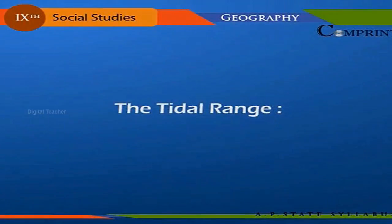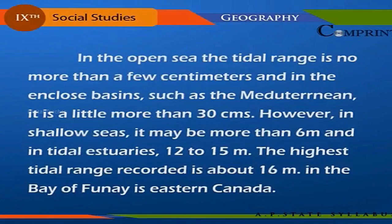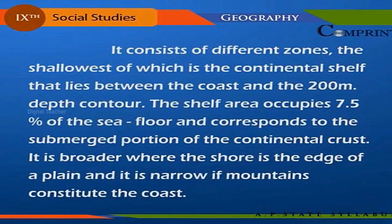In the open sea, the tidal range is no more than a few centimeters. In enclosed basins such as the Mediterranean, it is a little more than 30 centimeters. However, in shallow seas it may be more than 6 meters, and in tidal estuaries, 12 to 15 meters. The highest tidal range recorded is about 16 meters, in the Bay of Fundy in eastern Canada.